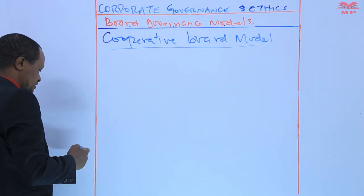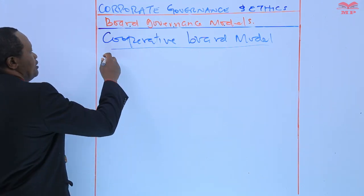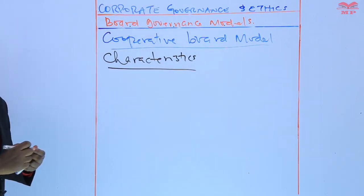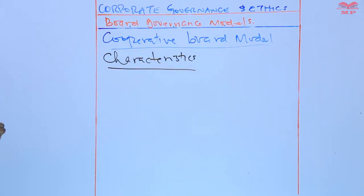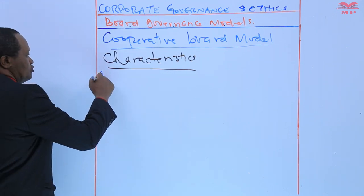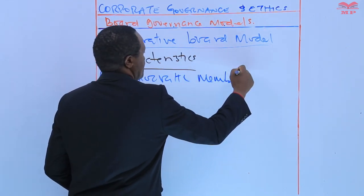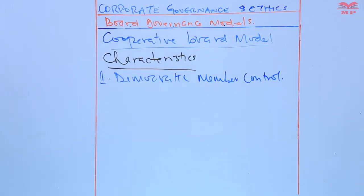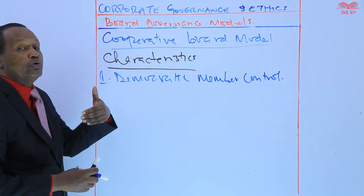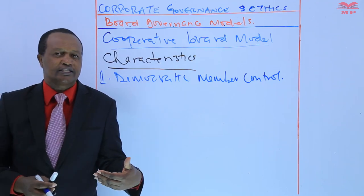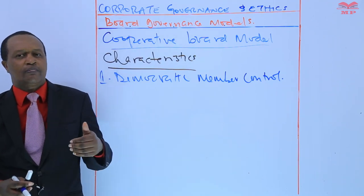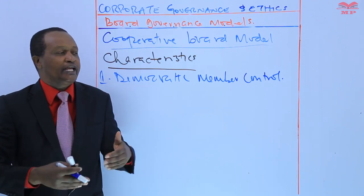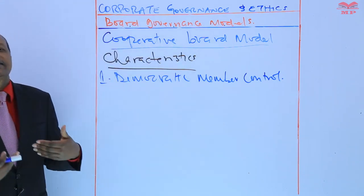What are the characteristics of a cooperative board model? The first characteristic is democratic member control. The foundation of cooperative governance is democratic member control — that is to say that each member has an equal vote, irrespective of their financial contribution, and that ensures equitable participation in decision making processes.